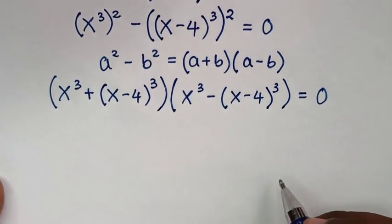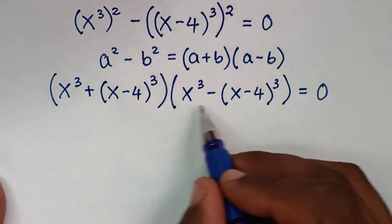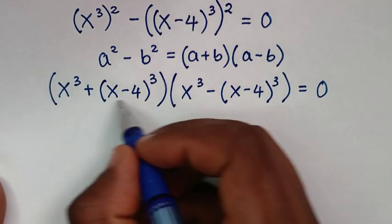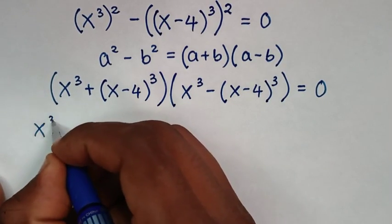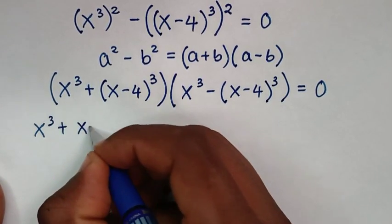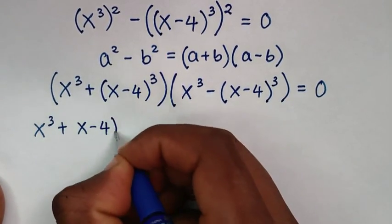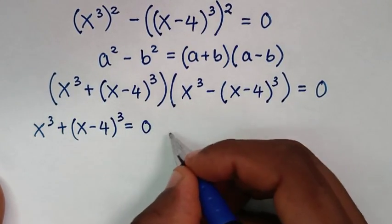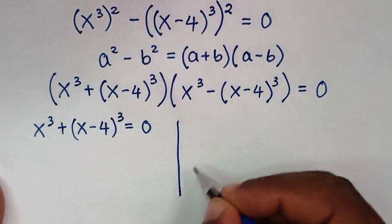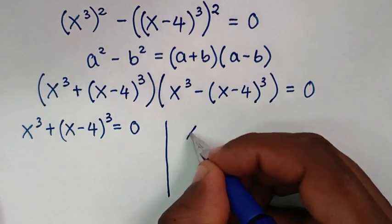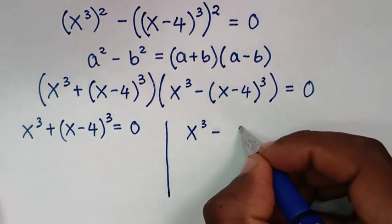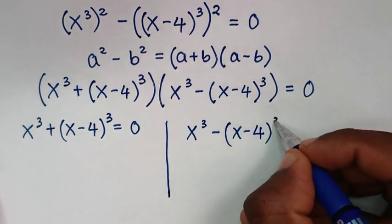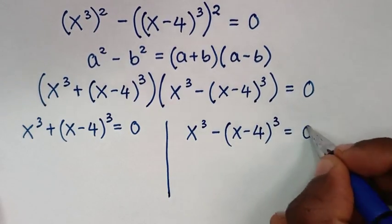From here we have two solutions. The first solution is x power 3 plus (x minus 4) power 3 is equal to 0, and the second solution is x power 3 minus (x minus 4) power 3 is equal to 0.